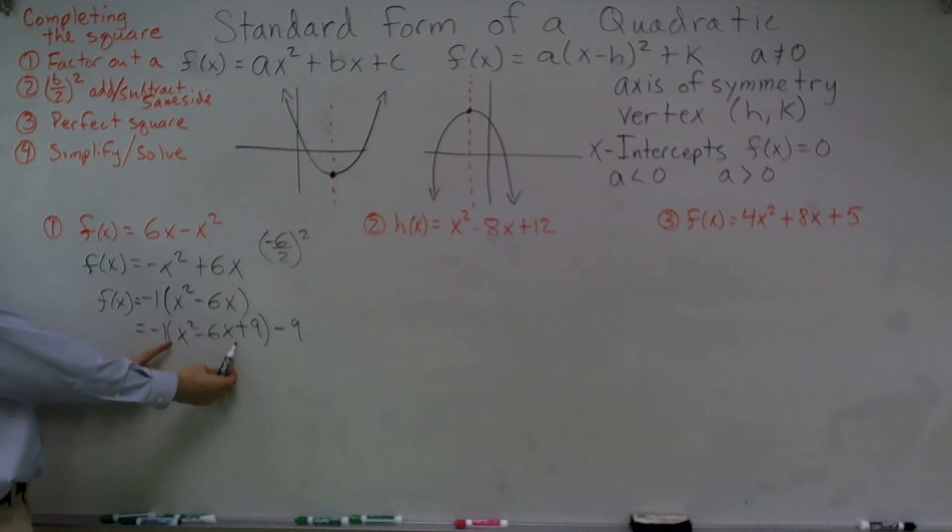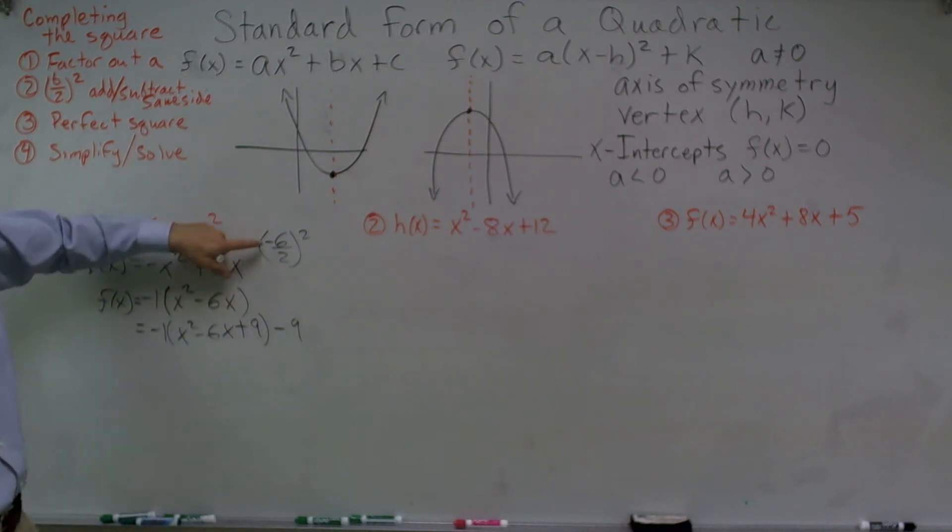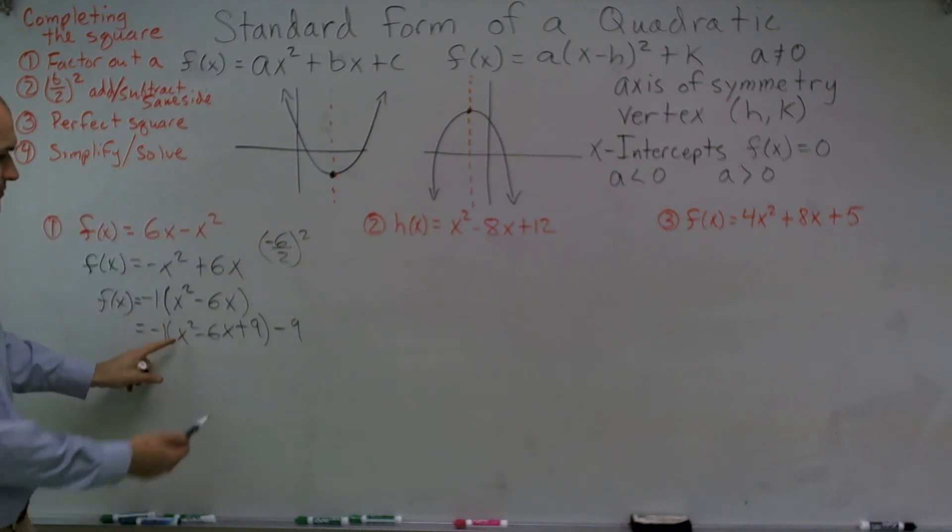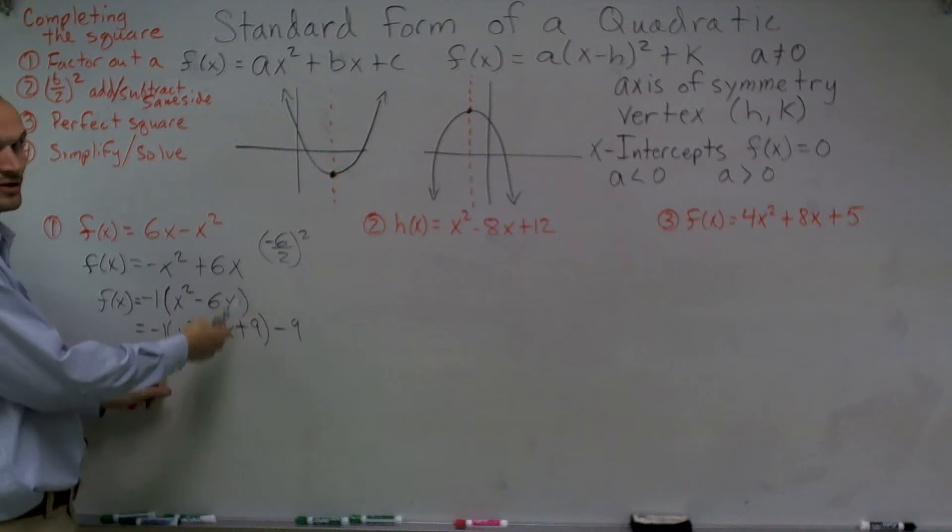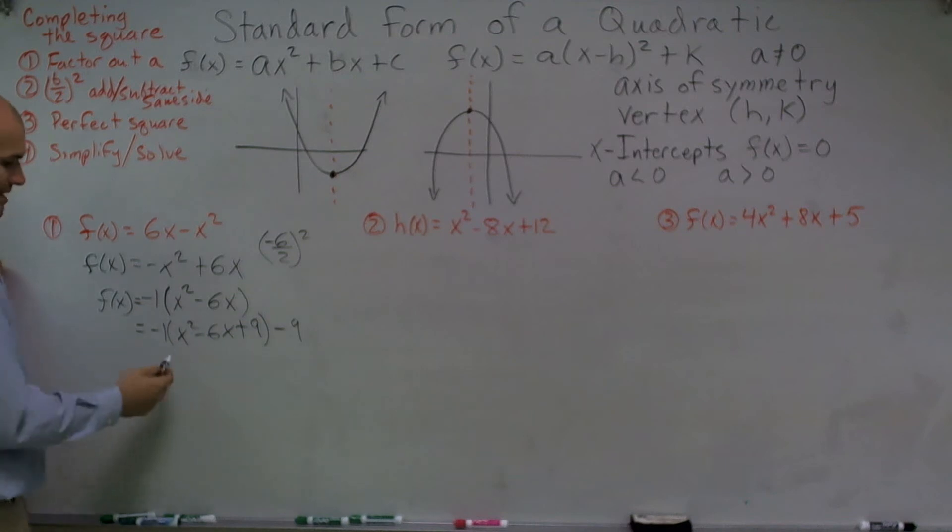So now I can take this. I need to make it as a perfect square. So I say negative 6 divided by 2 gave me negative 3. Well, I can write this as x - 3. Notice the similarity. x - 3 squared will give me that.